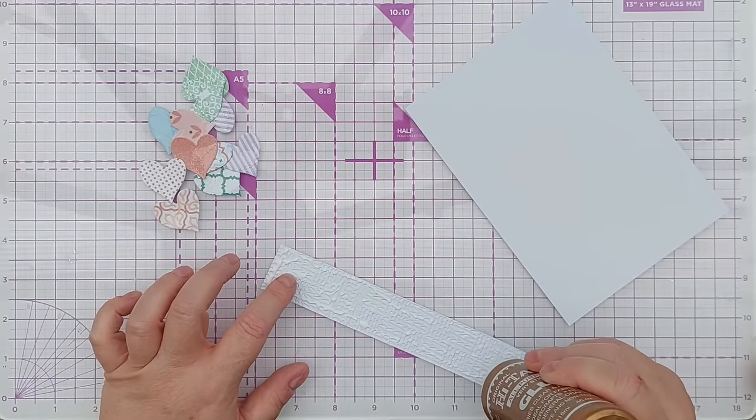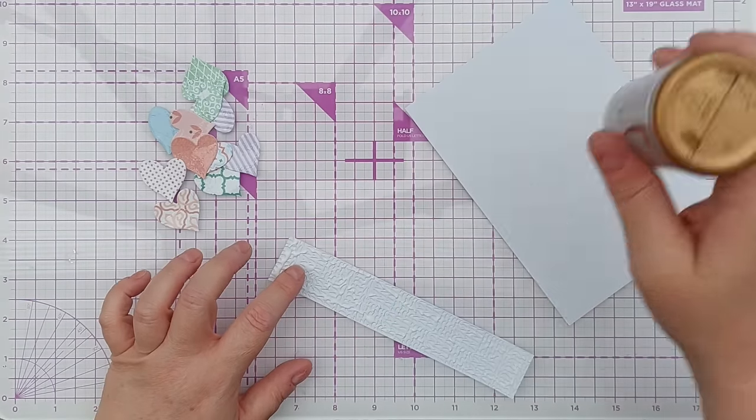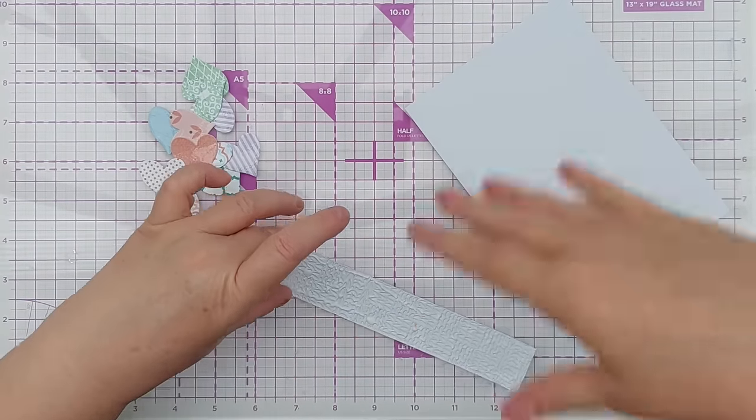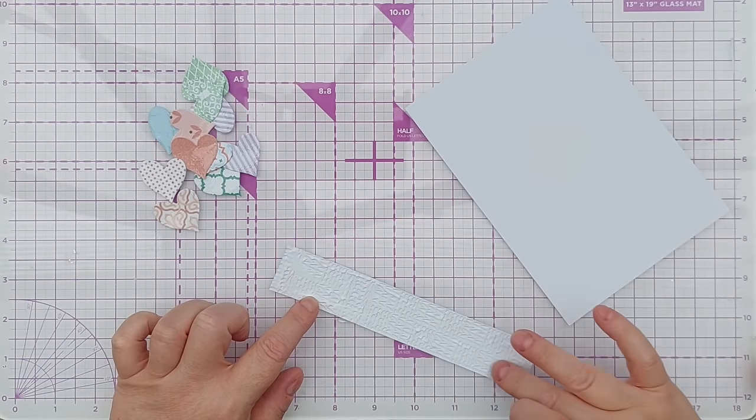If you wanted to, you could add some colour to this by ink blending on one side or the other. It'll bring out the texture a bit, but I want to keep it white, I think.